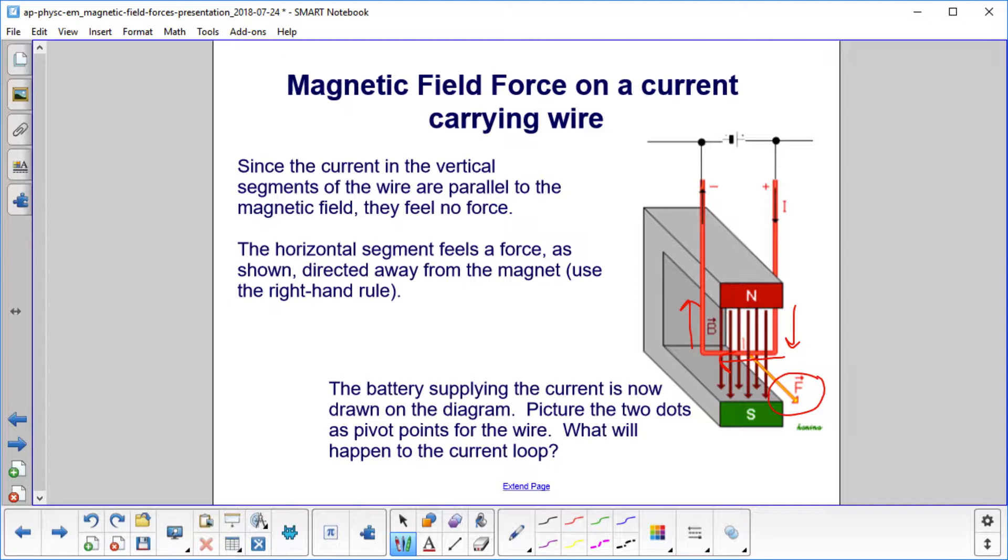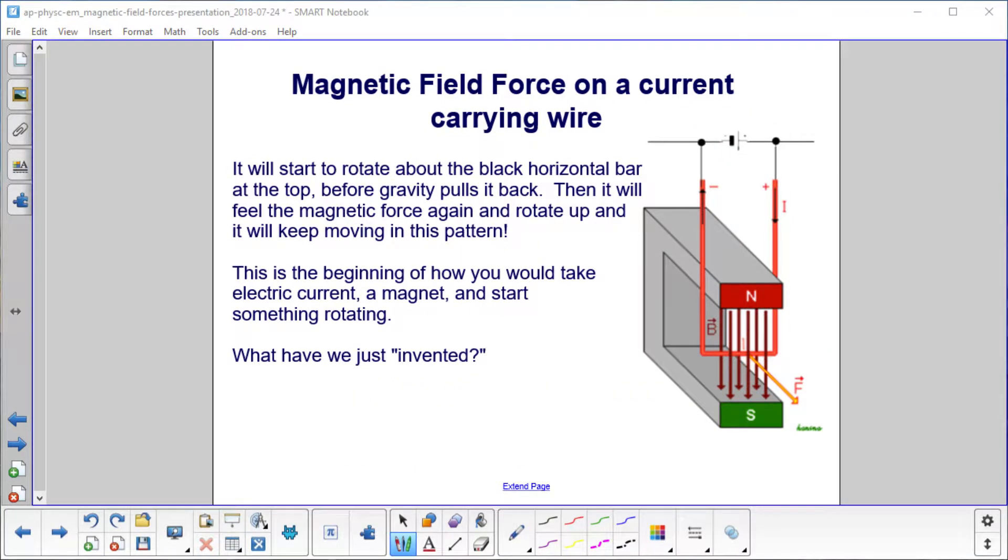The battery supplying the current is shown up here, and picture these two dots as little pivot points, so this entire wire loop can pivot. What will happen to the current loop if it has a force down there on the bottom? We have a force at a distance R from a rotation axis - we have a torque. Torque equals R cross F.